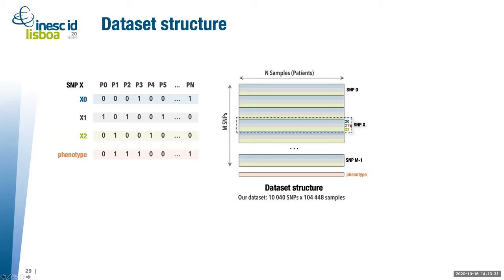Of course our dataset will not have just one SNP — it will have many. Each SNP in the dataset is separated into blue, gray, and green vectors representing genotypes 0, 1, and 2. To give an idea of scale: the dataset used in this study has more than 100,000 patient samples and more than 10,000 SNPs, each with three vectors.